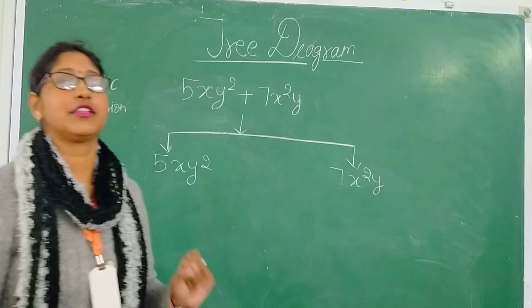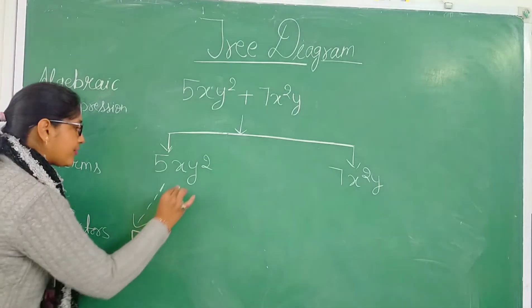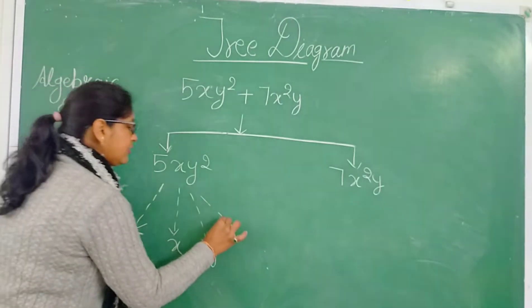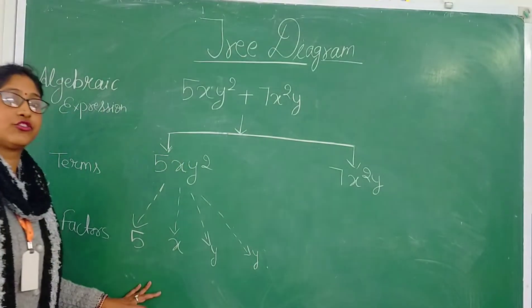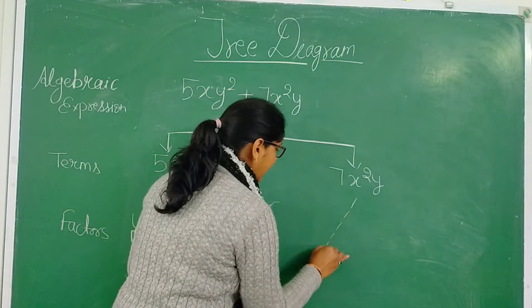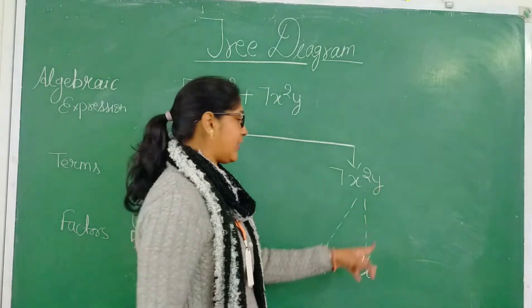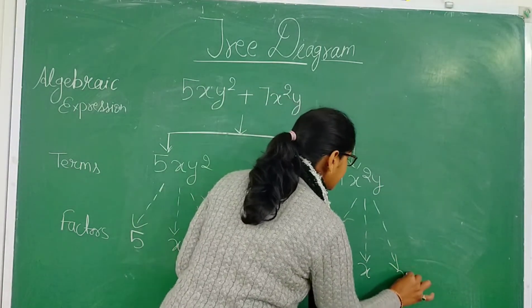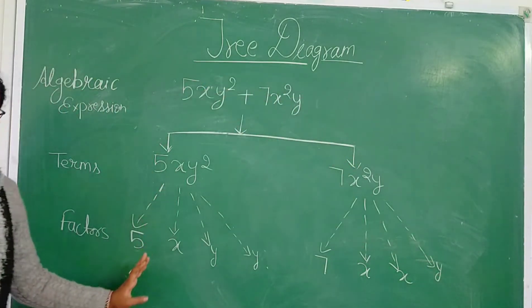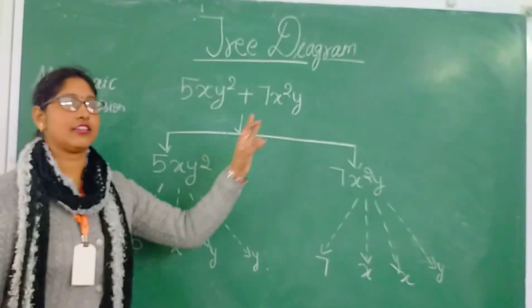We represent the factors with the help of dotted lines. So the factors of the first term 5xy² are: 5, x, y, and y. Similarly, for the second term 7x²y, we have factors 7, x, x (since x² means x into x), and y. So this tree diagram of the algebraic expression 5xy² plus 7x²y is complete.